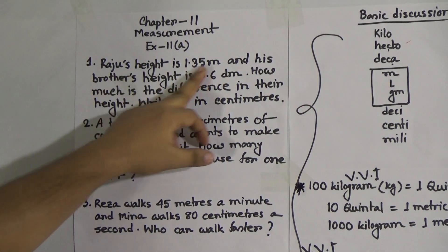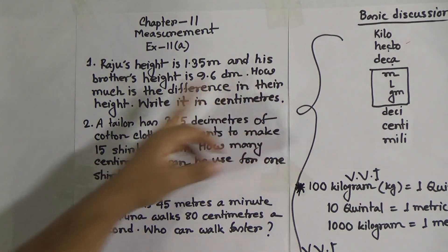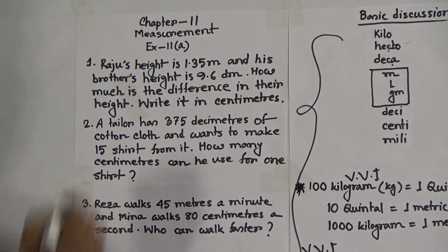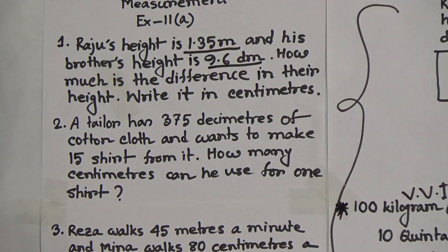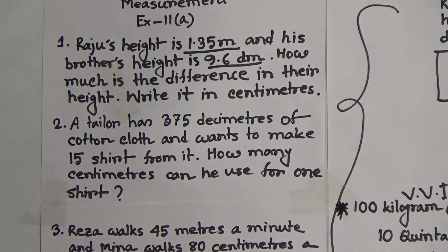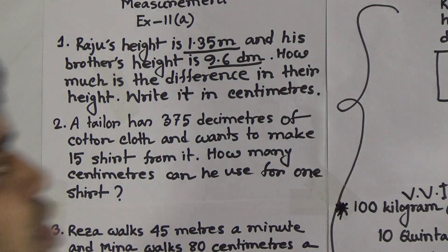Problem 1: Raju's height is 1.35 meters and his brother's height is 9.6 decimeters. How much is the difference in their height? Write it in centimeters. Notice the units are different — one is in meters and the other in decimeters — but the question asks for the answer in centimeters. So first we convert Raju's height to centimeters, then his brother's, then subtract to find the difference.